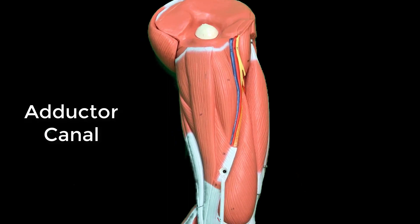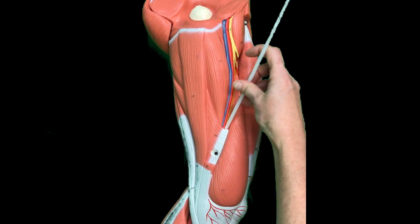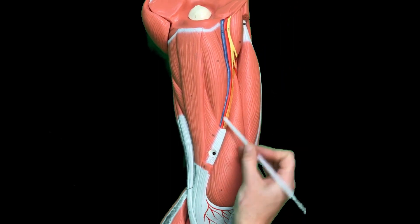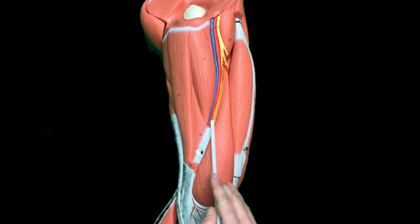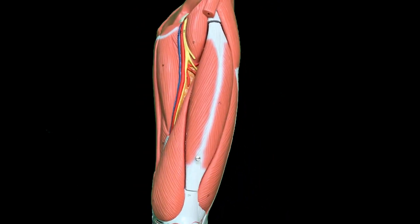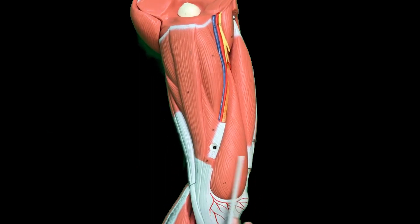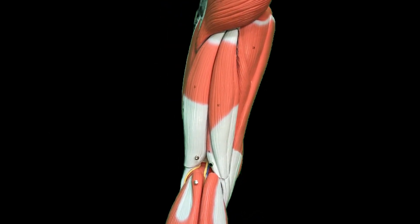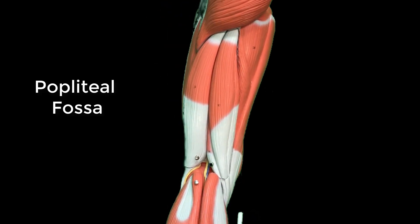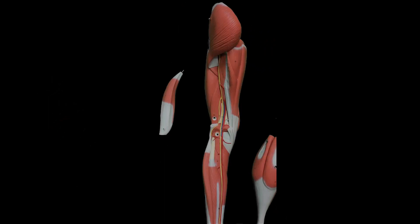What you can see here is the artery diving into what's known as the adductor canal. The adductor magnus has a little hiatus — a tunnel — for the artery, vein, and nerve to pass through. So we can see how the artery starts in the anterior compartment of the thigh, moves through to the medial leg, passes posterior to the knee, and ends up posteriorly in the popliteal fossa.